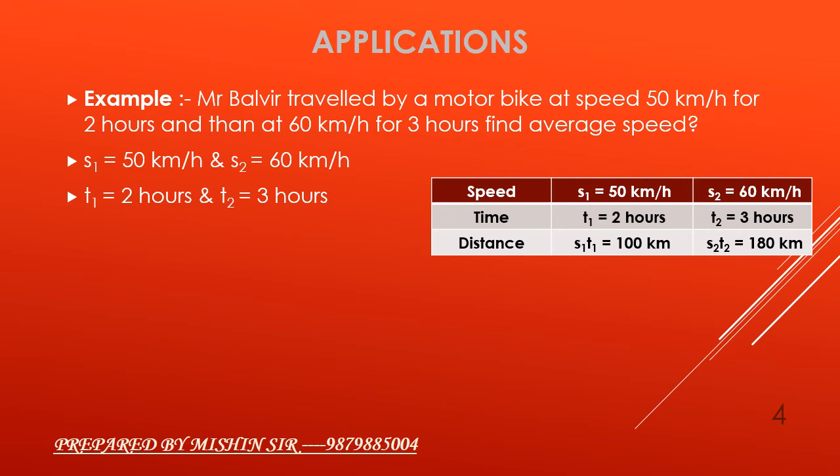s1 times t1 is equal to 100 km and s2 times t2 is equal to 180 km. We need to find average speed.